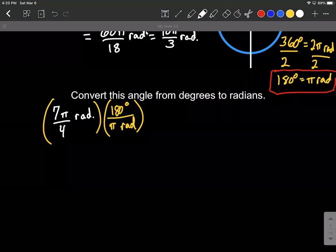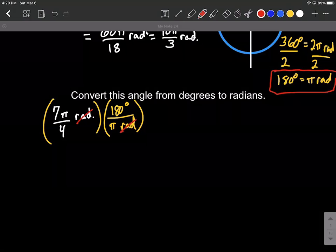And then to work through this, what we want to do is we're going to cancel out radians, one in the numerator, one in the denominator. So those get to cancel out. And then we can multiply. We also have a pi in the numerator and a pi in the denominator. Those can cancel.